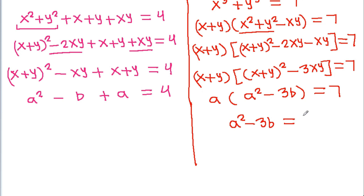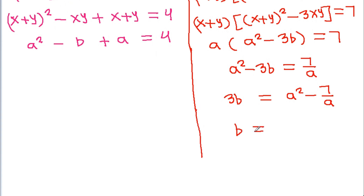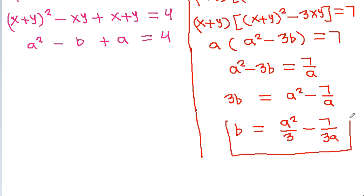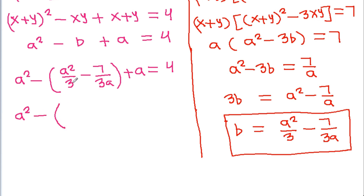From this, b is equal to 7 by a, and 3b will be equal to a squared minus 7 by a. So b equals a squared by 3 minus 7 by 3a. Substituting back into the first equation: a squared minus b minus a equals 4.